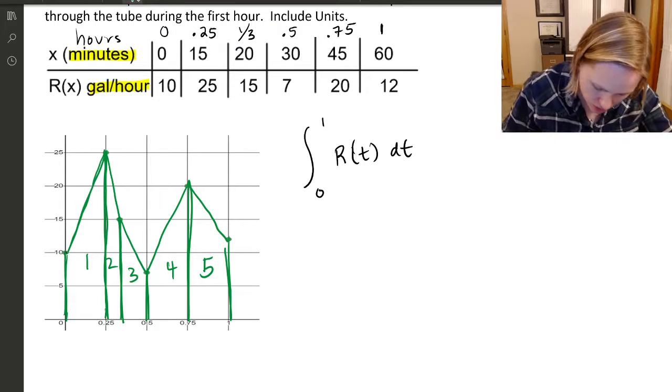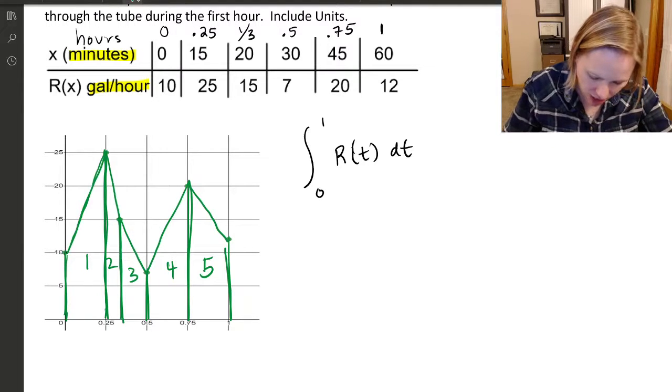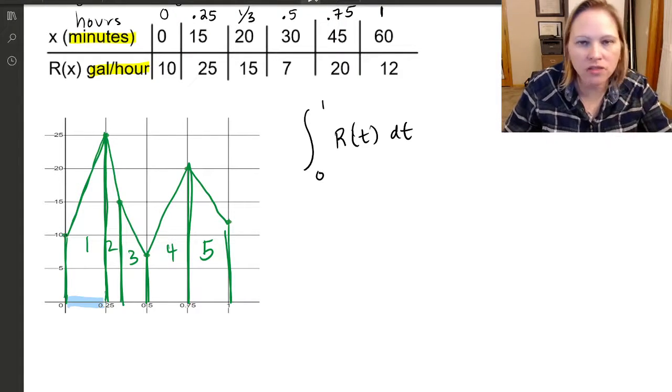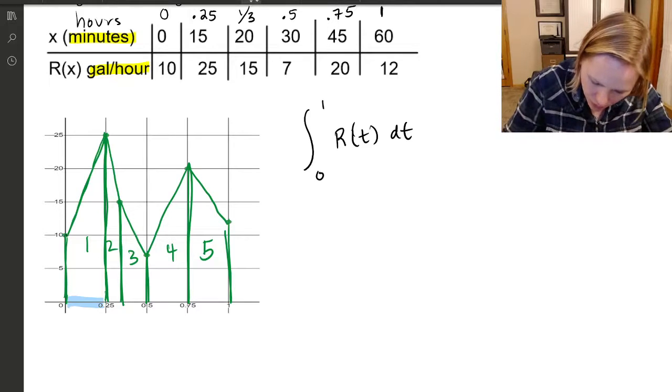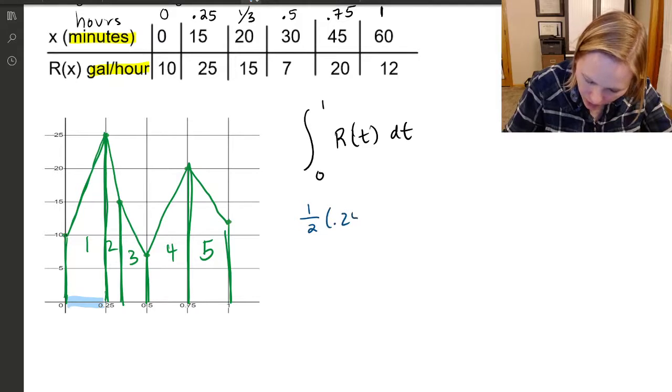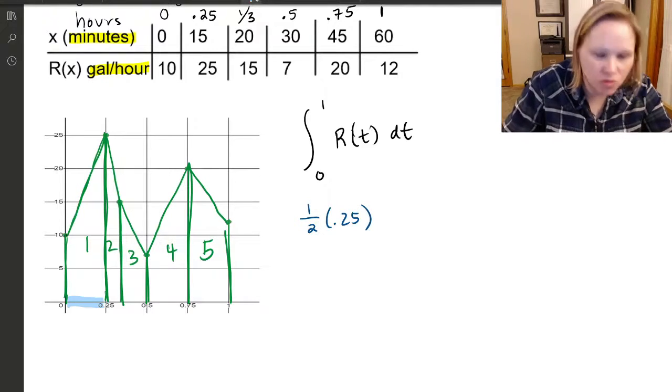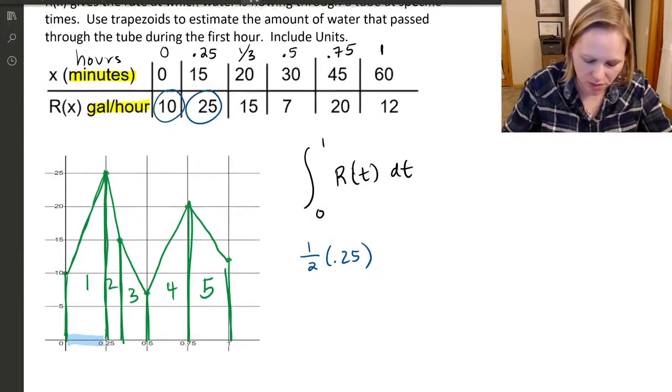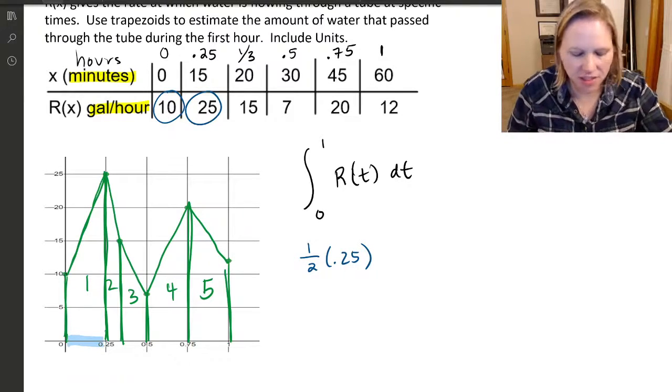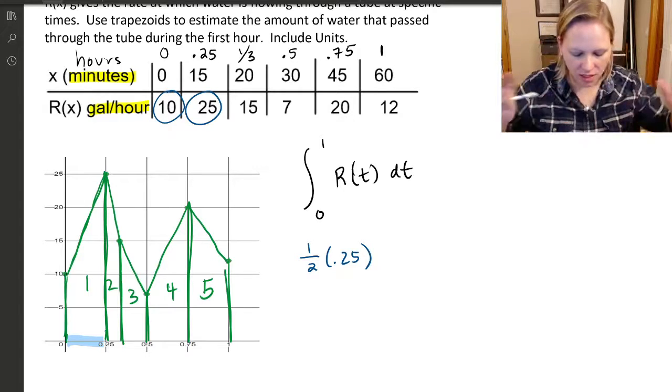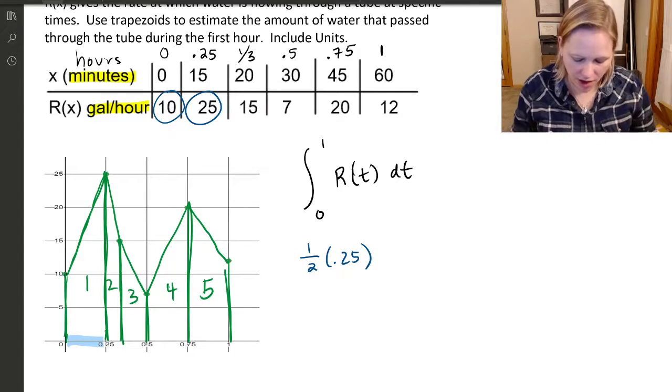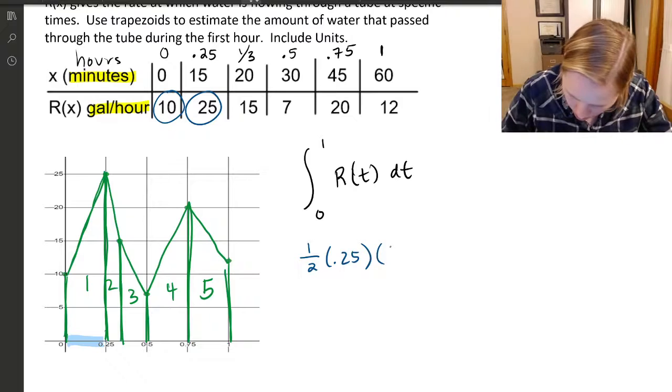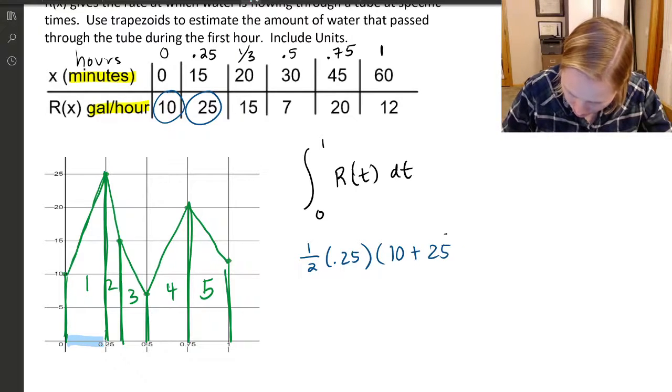Let's start with trapezoid one. The distance along the x-axis, the delta x is 0.25. For trapezoid number one, I'm going to do one half times 0.25. And then base one and base two are the two y values. So this 10 and 25, I can just pull it from the table. I don't even need the graph. The graph is just there as a visual guide. So I'm going to write down 10 plus 25.